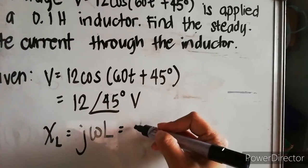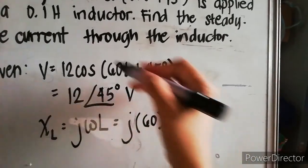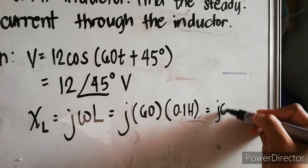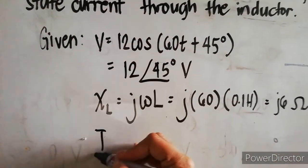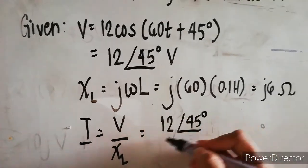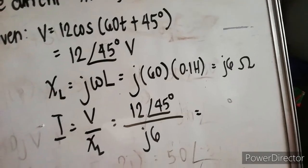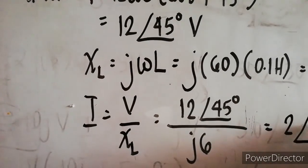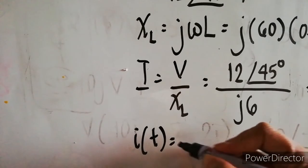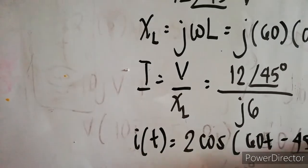Solving for the inductive reactance X sub L: j times omega L equals j times 60 times 0.1 henry, which equals j6 ohms. Using Ohm's law, current equals V over X sub L: 12 angle 45 degrees divided by j6, which gives 2 angle negative 45 degrees amperes. In time domain form, the current is 2 cosine of 60t minus 45 degrees amperes.